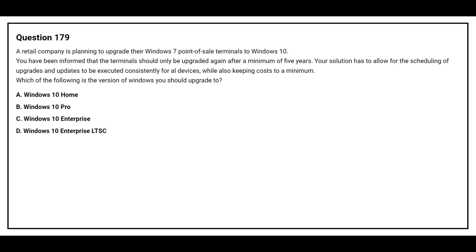Question 179. A retail company is planning to upgrade their Windows 7 point-of-sale terminals to Windows 10. The terminals should only be upgraded again after a minimum of five years. The solution must allow scheduling of upgrades and updates for all devices while keeping costs to a minimum. Options: Option A: Windows 10 Home, Option B: Windows 10 Pro, Option C: Windows 10 Enterprise, Option D: Windows 10 Enterprise LTSC.